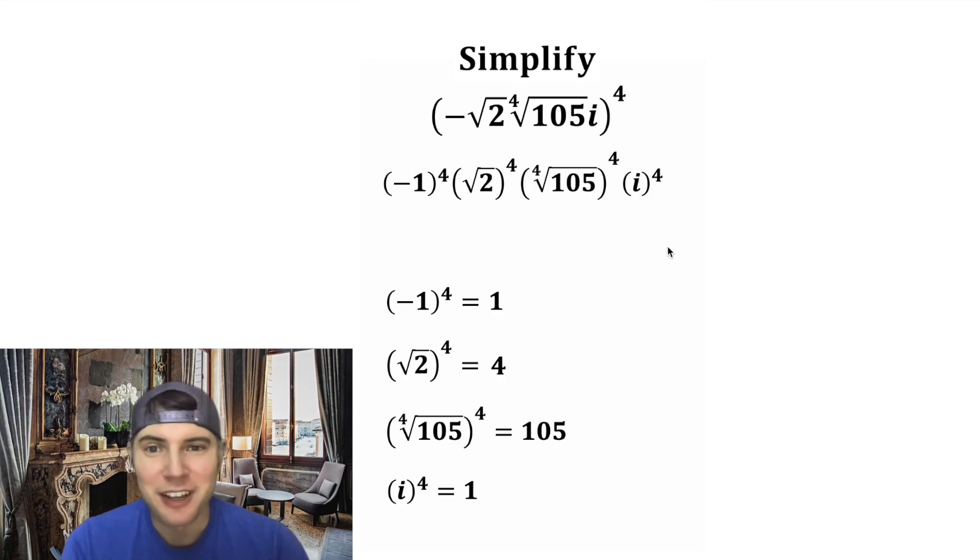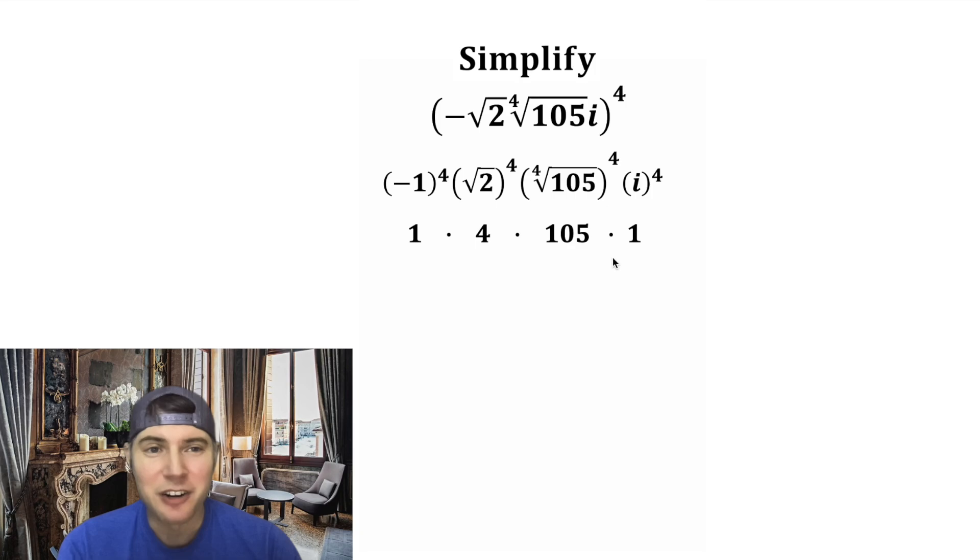Now we're ready to simplify this. Negative one to the fourth was equal to one. Square root of two to the fourth was equal to four. Fourth root of 105 to the fourth was equal to 105. And i to the fourth was equal to one. One times four times 105 times one is equal to 420.